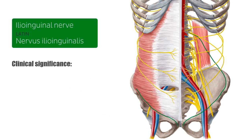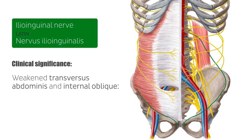Let's have a brief chat about the clinical significance of the ilioinguinal nerve. As we can tell from its location, the ilioinguinal nerve can be damaged either through surgery or as a result of trauma to the abdominal wall. This kind of damage may result in the weakening of the transversus abdominis and internal oblique muscles, which in turn can lead to the development of an inguinal hernia.